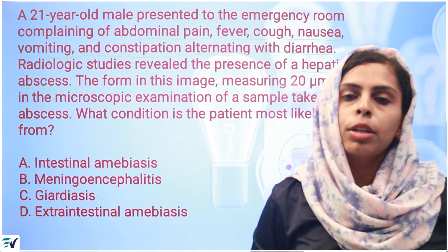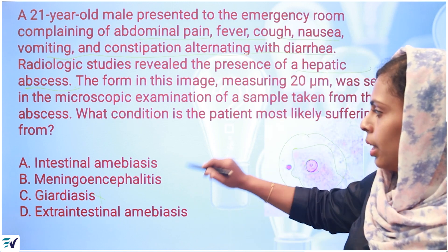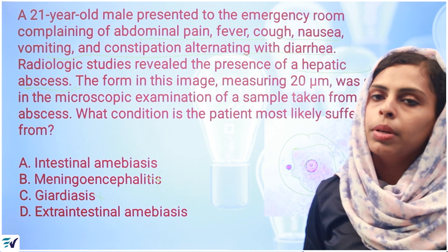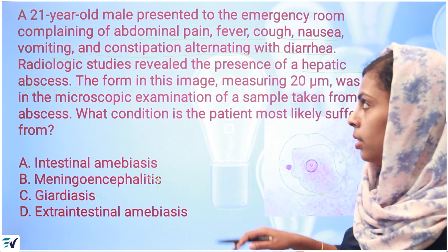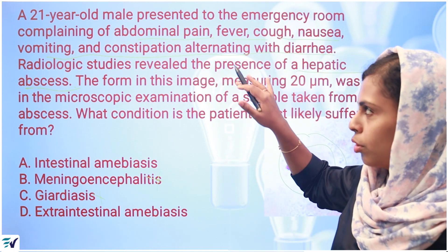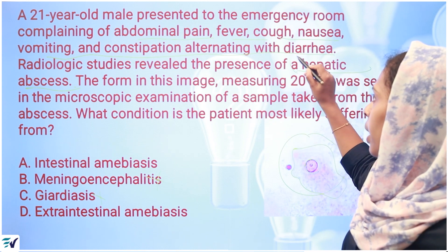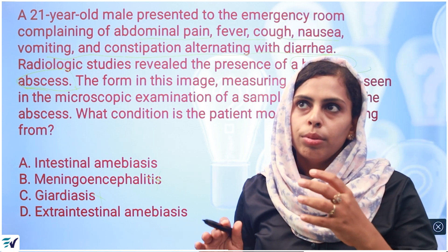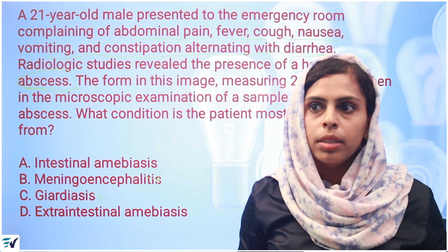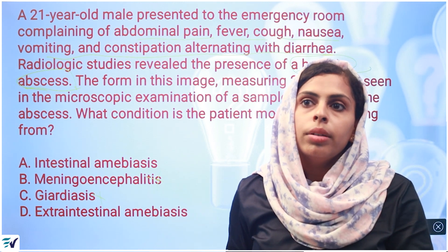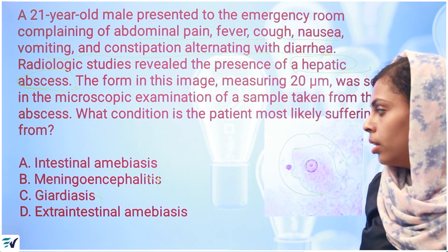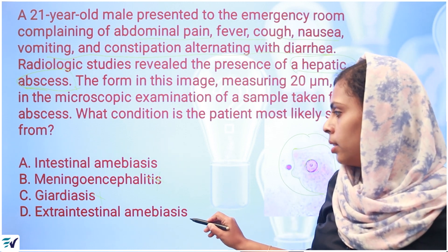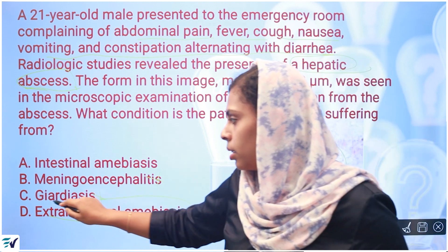Giardiasis is not the answer. Meningoencephalitis symptoms would be mostly head-related. This patient has intestinal amoebiasis or extra-intestinal amoebiasis. For intestinal amoebiasis, we would expect continuous diarrhea — but here there is constipation alternating with diarrhea, plus a hepatic abscess, indicating extra-intestinal spread. So the answer is extra-intestinal amoebiasis.